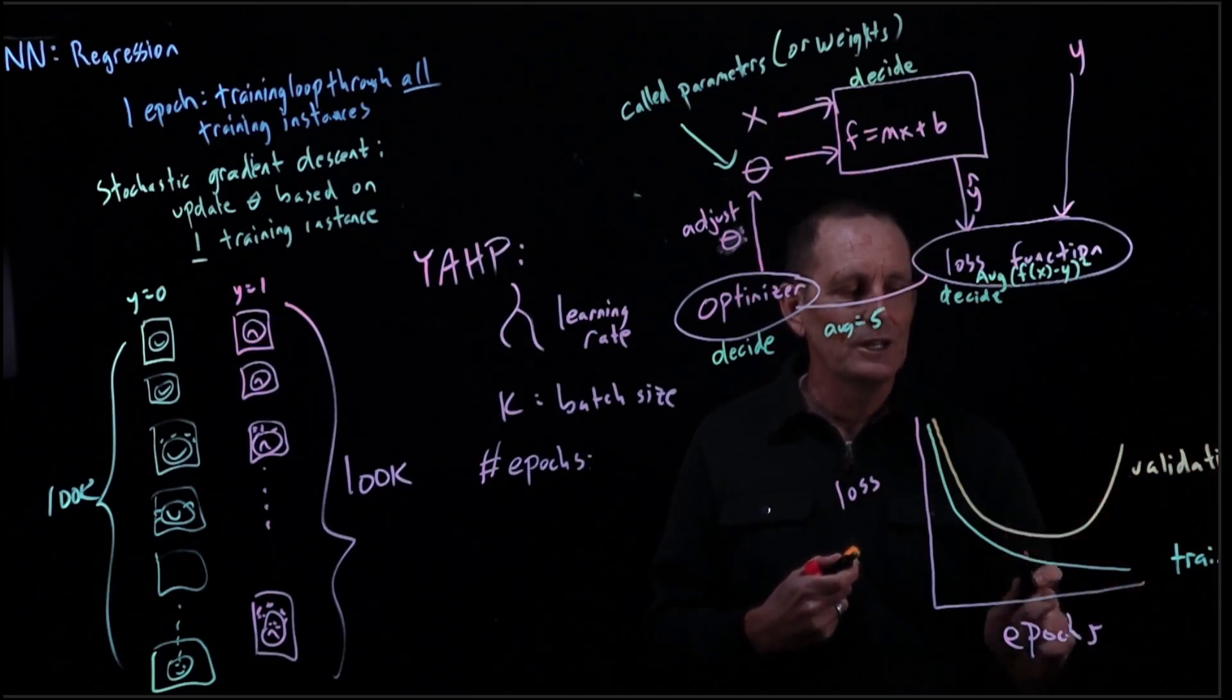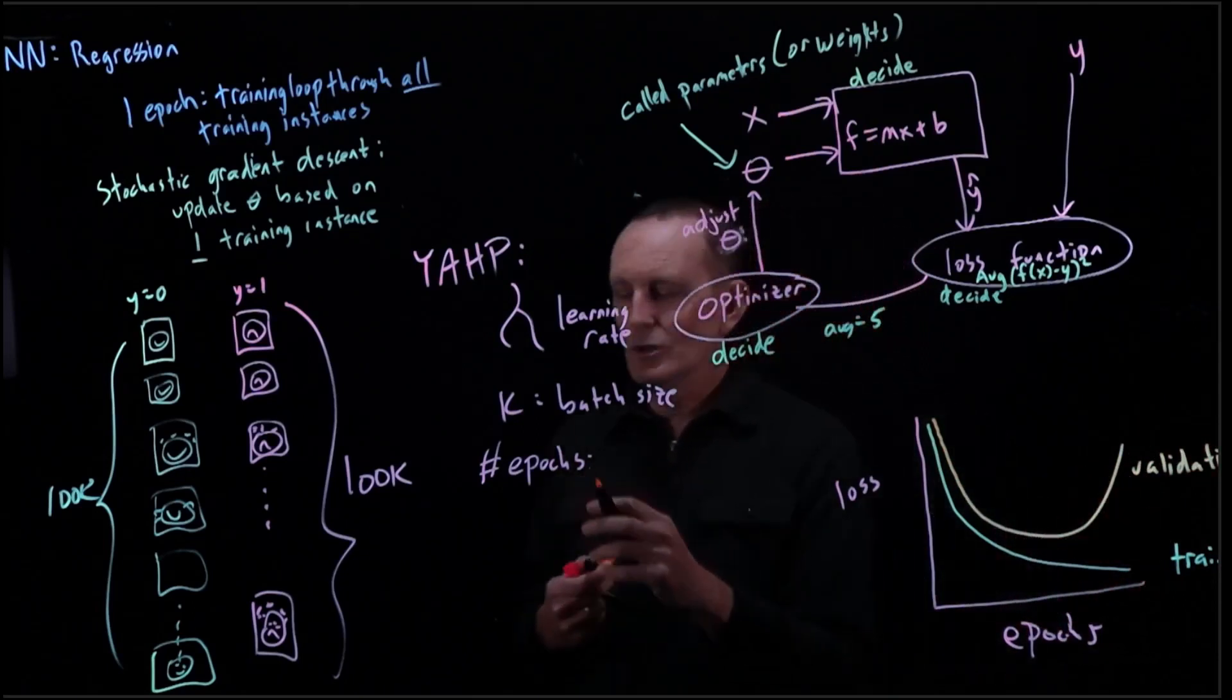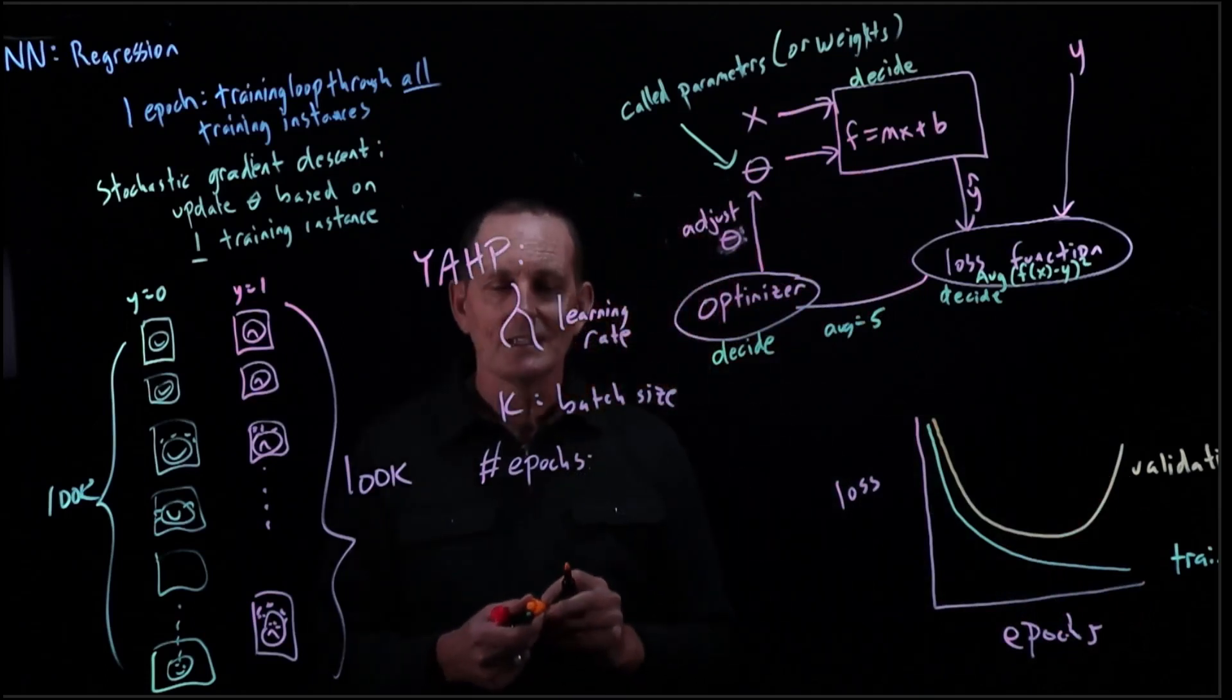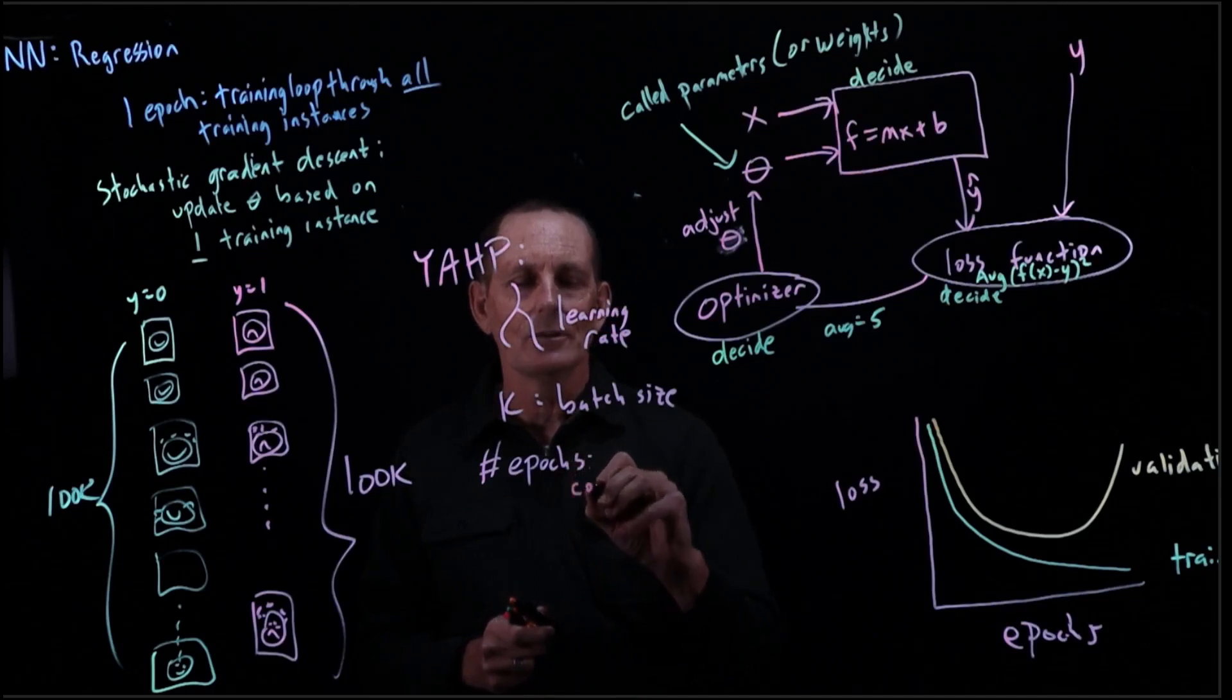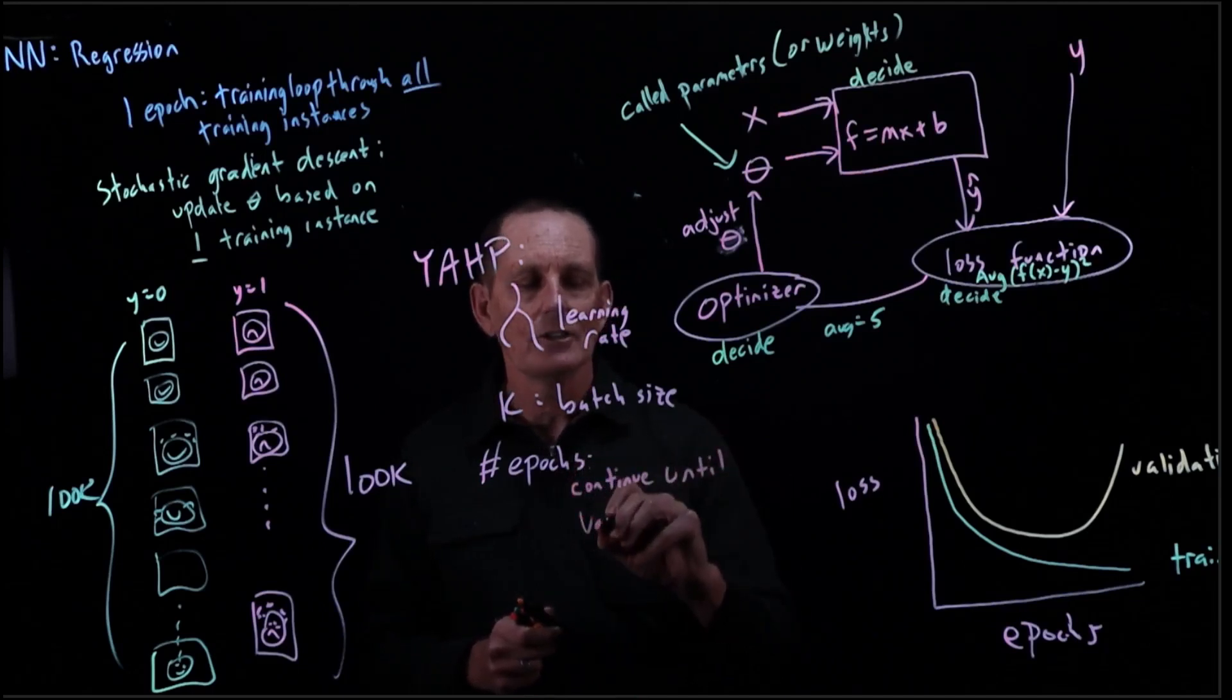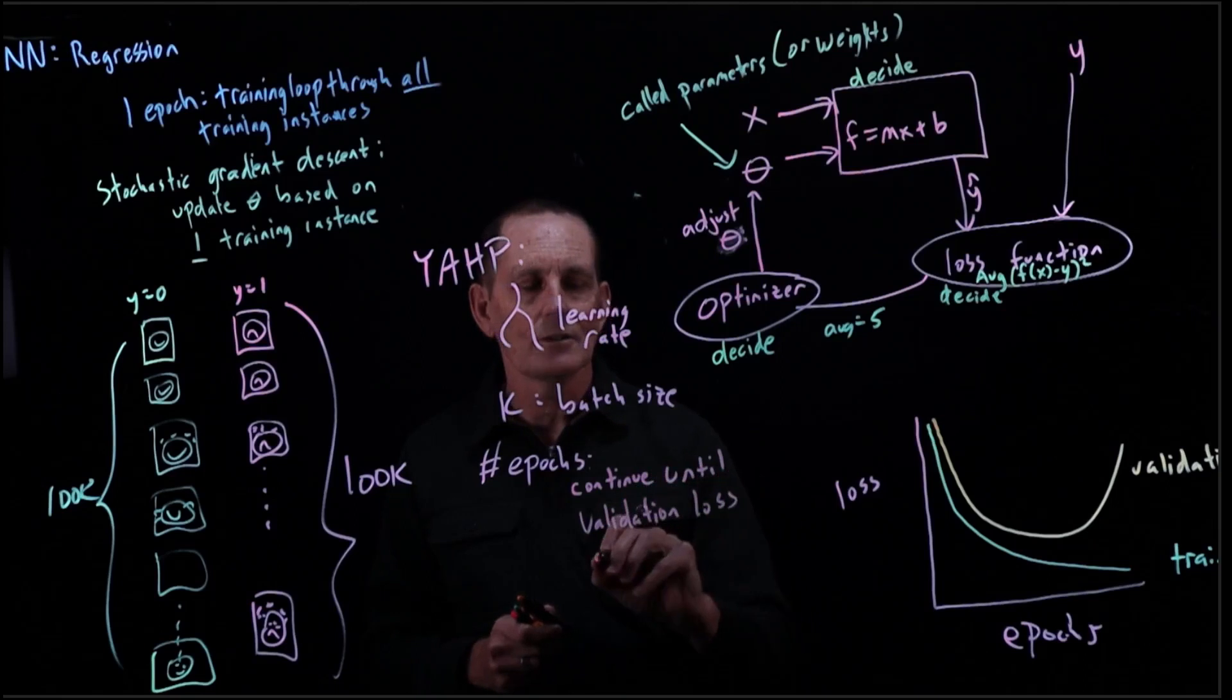And so what we can do is actually choose the number of epochs. We might say we're going to do this sort of formulaically. We're going to go ahead and continue until the validation loss starts increasing.